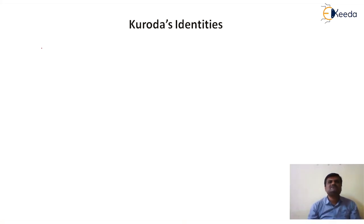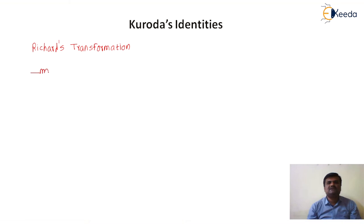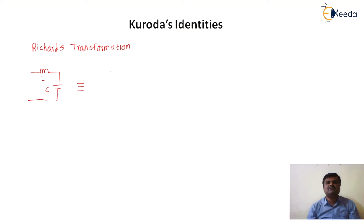Since we have studied in a previous video, Richard's transformation is used to transform lumped components into distributed components at microwave frequencies. For example, if we consider a ladder circuit with L and C, we studied that in Richard's transformation, an inductor is represented by a short-circuit stub and a capacitor is represented by an open-circuit stub.